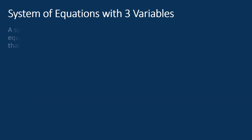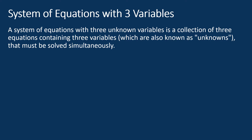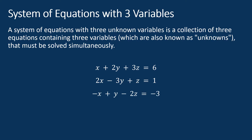A system of equations with three unknown variables is a collection of three equations containing three variables, which are also known as unknowns, that must be solved simultaneously. For example, let's see these three equations: x plus 2y plus 3z equals 6; 2x minus 3y plus z equals 1; negative x plus y minus 2z equals negative 3. This is a system of equations with three variables, where the unknown variables are x, y, and z.